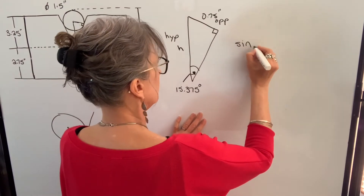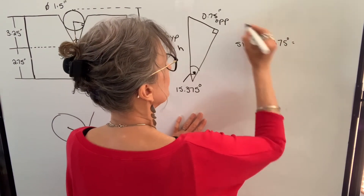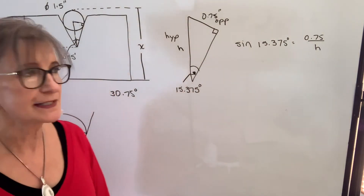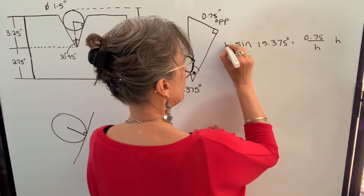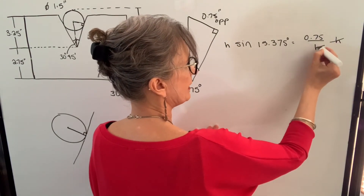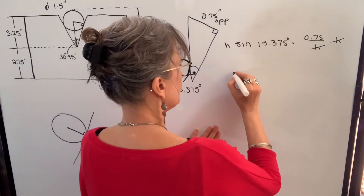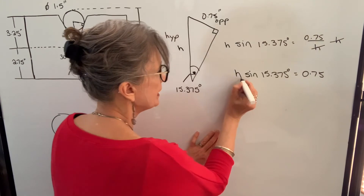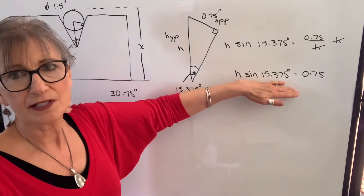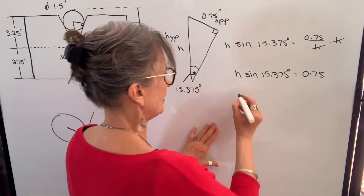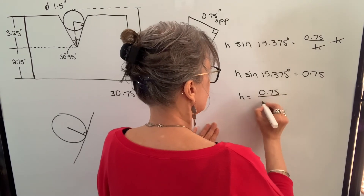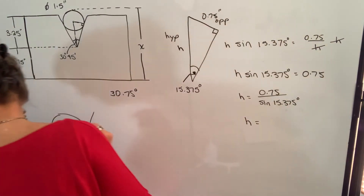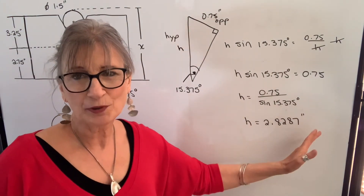So the sine of this angle, 15.375 degrees, will be equal to the opposite side of 0.75 divided by the hypotenuse. Similar to what I did in my first example, I need to solve for H, so I'm going to multiply both sides by H so that it cancels. Whatever I do to one side of the equation, I have to do the other side. So I'm going to have H times the sine of 15.375 degrees equals 0.75. Now to isolate H, I'm going to divide by the sine of 15.375 degrees on both sides. So H will equal 0.75 divided by the sine of 15.375 degrees. When I calculate that, I get 2.8287 — I'm going to round off to four places, but I'm going to keep it on my calculator.